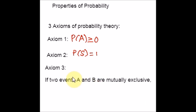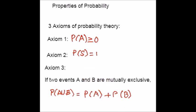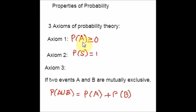The third axiom is applicable when you take two events that are mutually exclusive. Consider two events A and B that are mutually exclusive. Then the probability of either A or B occurring is the probability of A occurring plus the probability of B occurring. These are the three axioms. Now let us see the properties and their proofs, using the axioms wherever necessary.